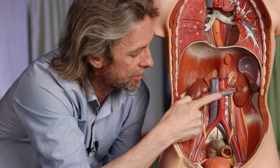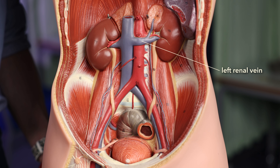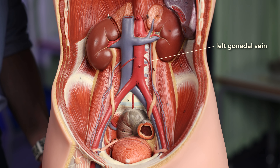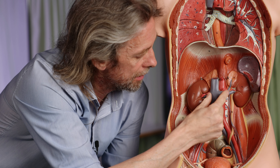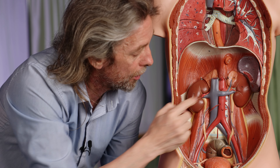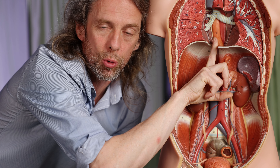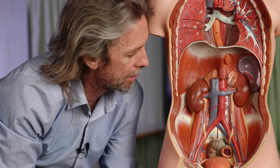The renal veins are retroperitoneal - notice how the renal veins are anterior to the arteries. The right gonadal vein drains directly into the inferior vena cava, while the left gonadal vein usually drains into the left renal vein. The kidneys drain via renal veins, and the suprarenal veins drain in there as well. The inferior vena cava then passes through - the liver will be wrapped around it - and then passes through the diaphragm to get back to the heart. All of those blood vessels are retroperitoneal.